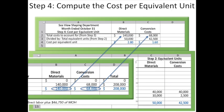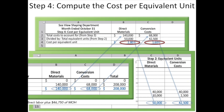If we take that $208,000 and pull it apart — $140,000 for direct materials and $68,000 in conversion cost — and divide each by the total equivalent units computed in step 2: 50,000 equivalent units for direct materials and 42,500 equivalent units for conversion cost, we get a cost per equivalent unit of $2.80 for materials and $1.60 for conversion.